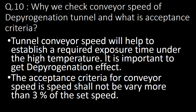Next question: why do we check conveyor speed of the depyrogenation tunnel and what is the acceptance criteria? Tunnel conveyor speed helps to establish a required exposure time under the high temperature, which is important to get the depyrogenation effect. The acceptance criteria for conveyor speed is that speed shall not vary more than 3% of the set speed.